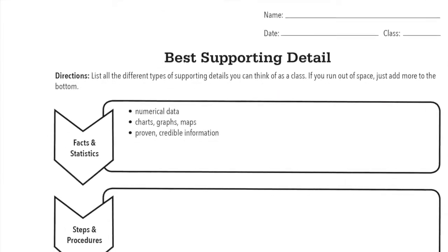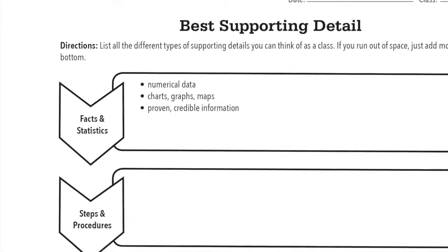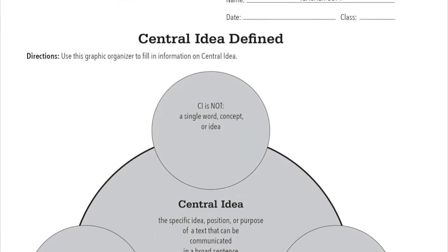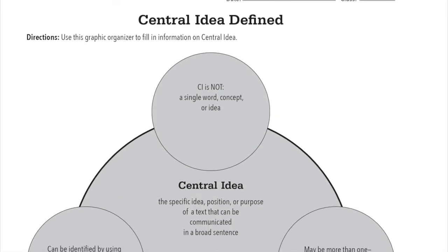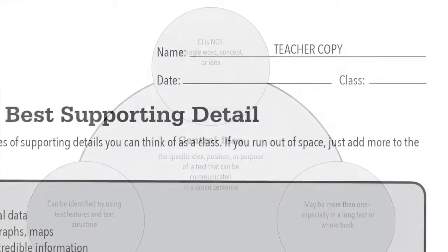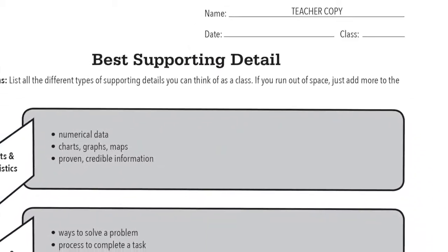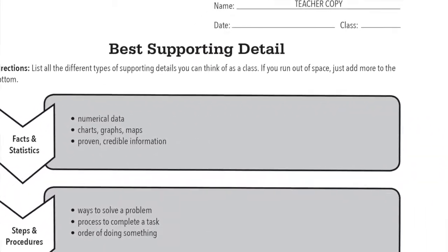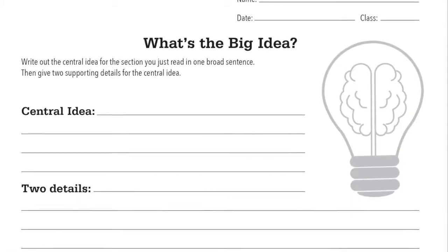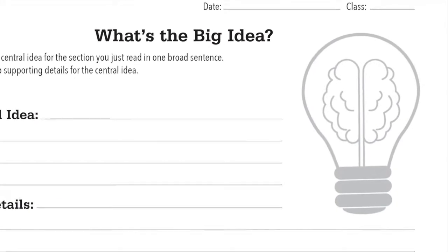Both Central Idea Defined and Best Supporting Detail are examples of a note sheet. The student version is the first and the teacher copy is second. The teacher copy is a guide for you to use during the instruction section of this lesson. Last is the What's the Big Idea activity handout used in the Reading Tasks section.